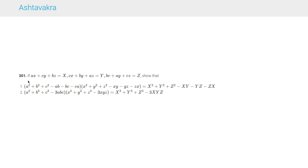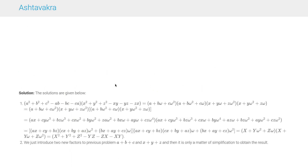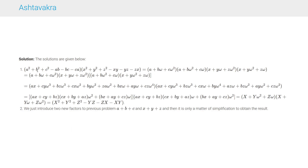Question 301 says that if ax + cy + bz = X, cx + by + az = Y, bx + ay + cz = Z, show that (a² + b² + c² - ab - bc - ca)(x² + y² + z² - xy - yz - zx) = X² + Y² + Z² - XY - YZ - ZX. The second part says that (a³ + b³ + c³ - 3abc)(x³ + y³ + z³ - 3xyz) = X³ + Y³ + Z³ - 3XYZ.